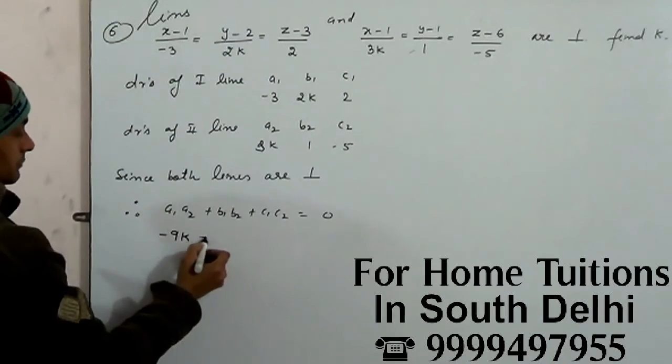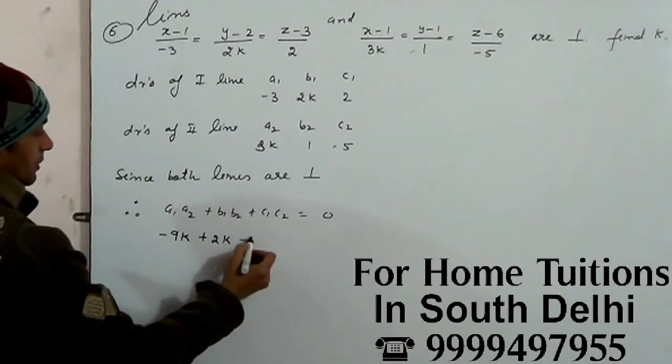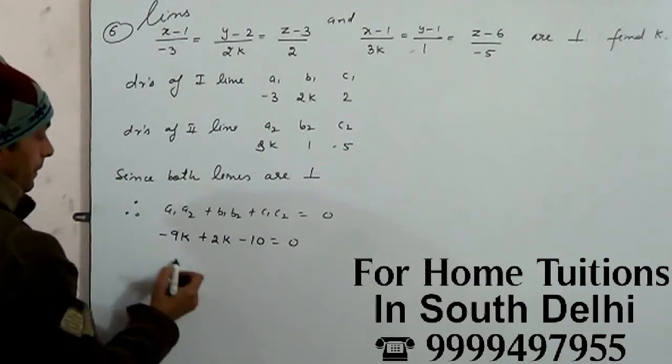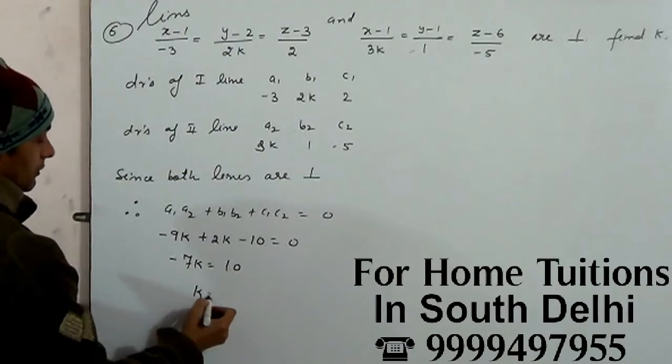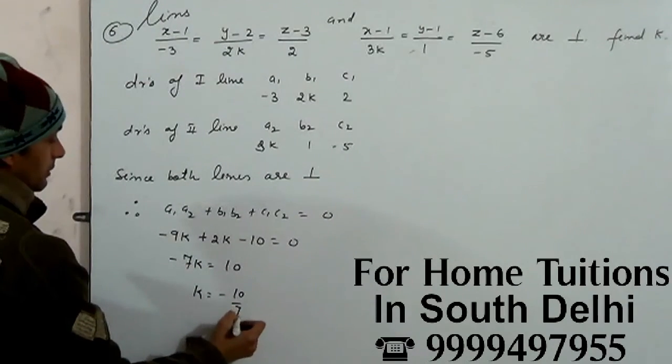Minus 9K plus 2K minus 10 is equal to 0. Minus 7K is equal to 10. So, K value is minus 10 by 7.